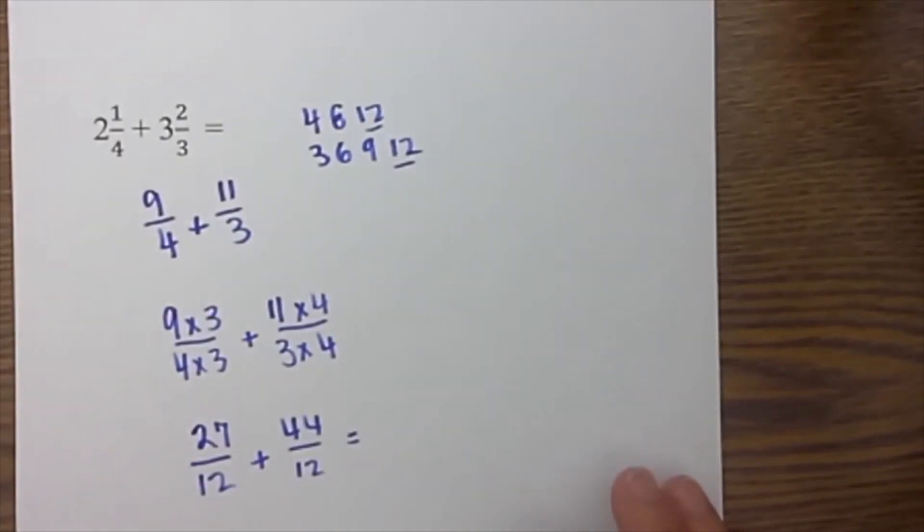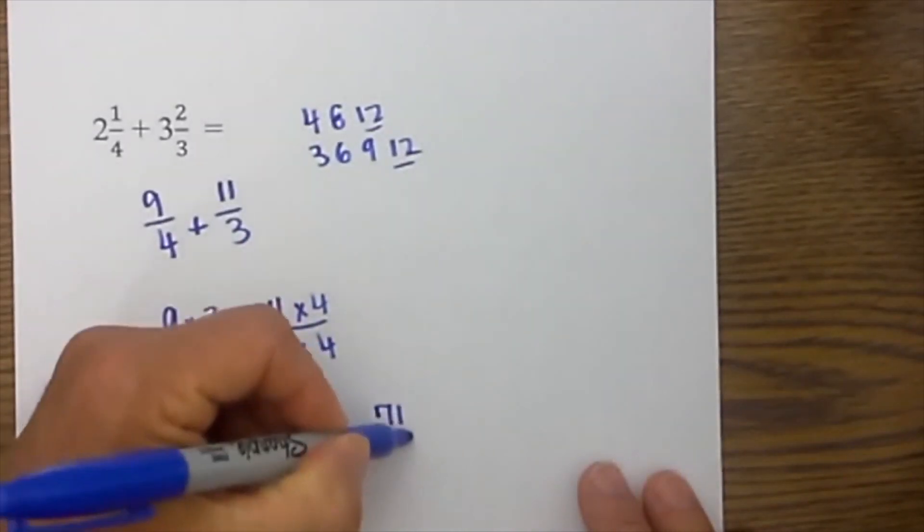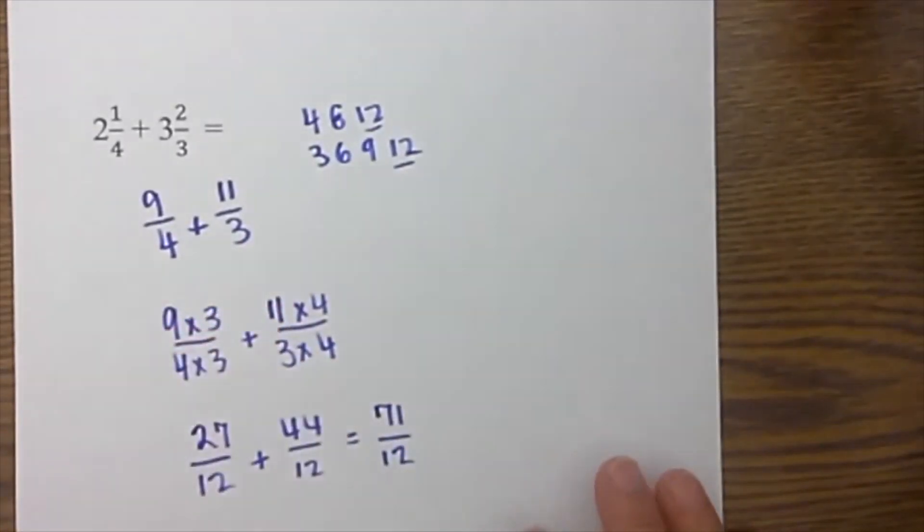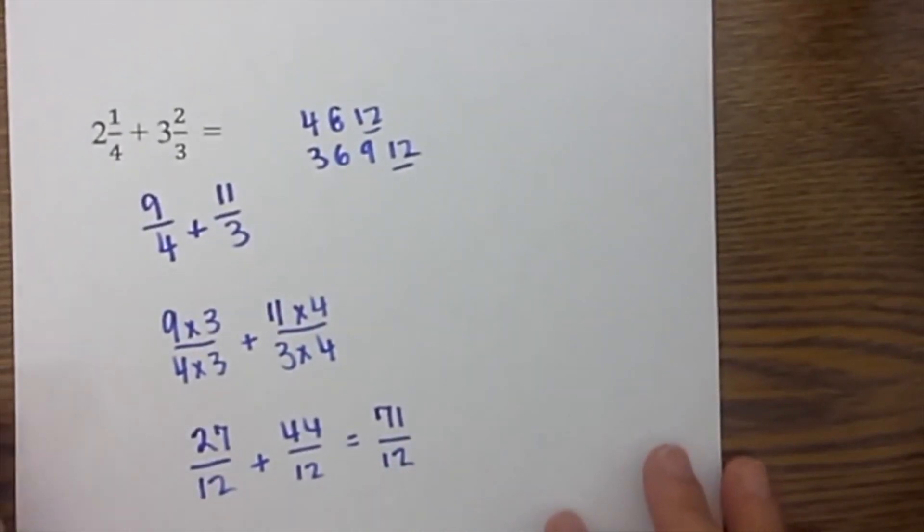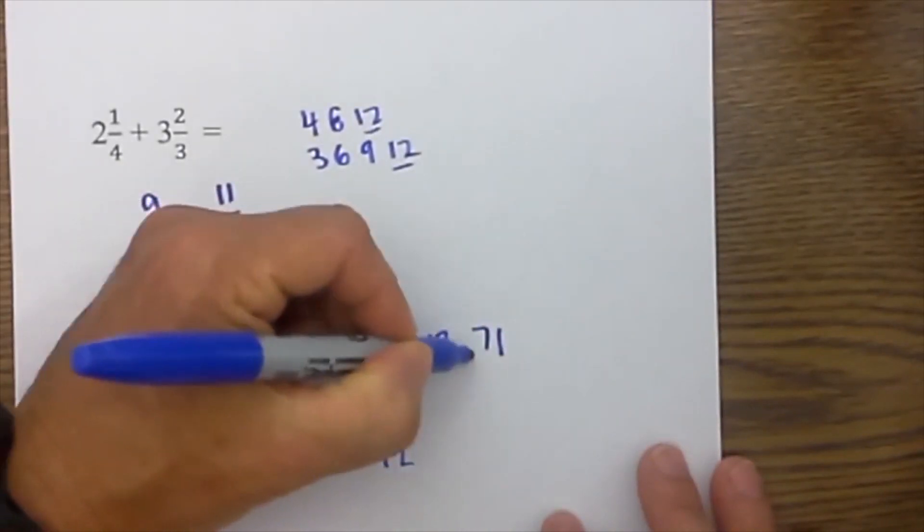I now just add those. 27 plus 44 is equal to 71 over 12. Now I convert it to a mixed number by dividing 71 divided by 12.